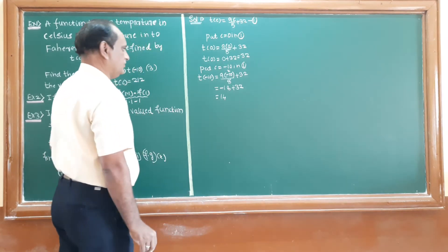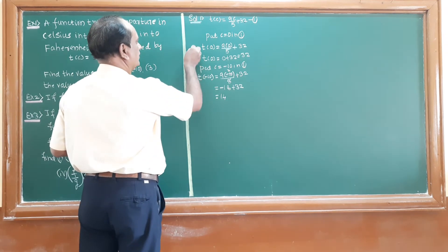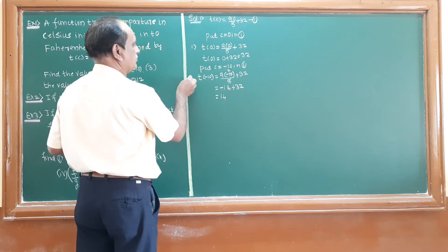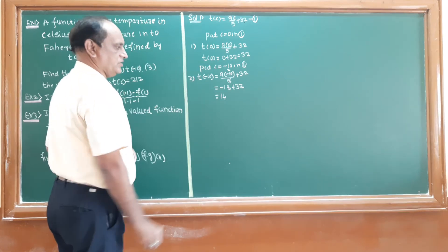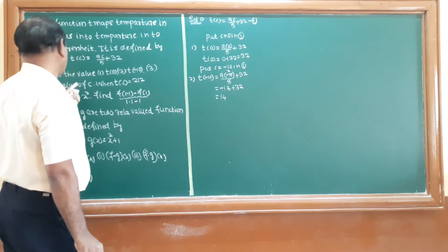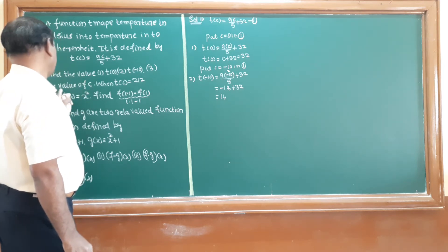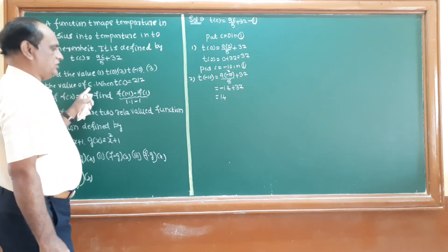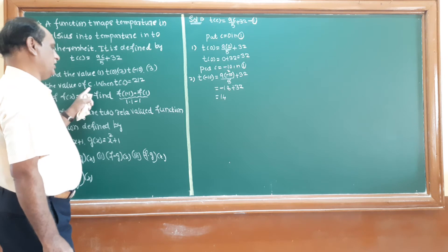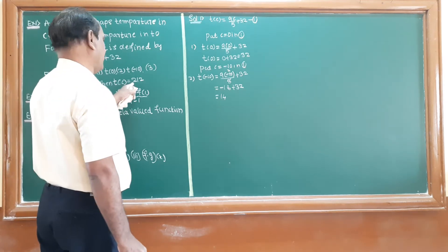So the first case gives T(0) = 32, and the second case gives T(-10) = 14. Now we come to the third case: find the value of C when T(C) = 212.